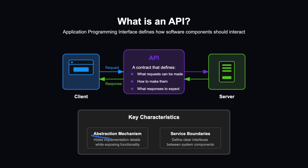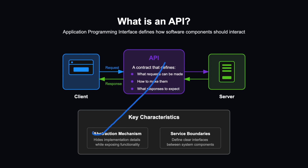An API is an abstraction mechanism because it hides the implementation details while exposing the functionality. For example, we can make a request to save user data on the server, but we don't care at all about how the logic works behind the scenes. We only care about the interface provided through the API.